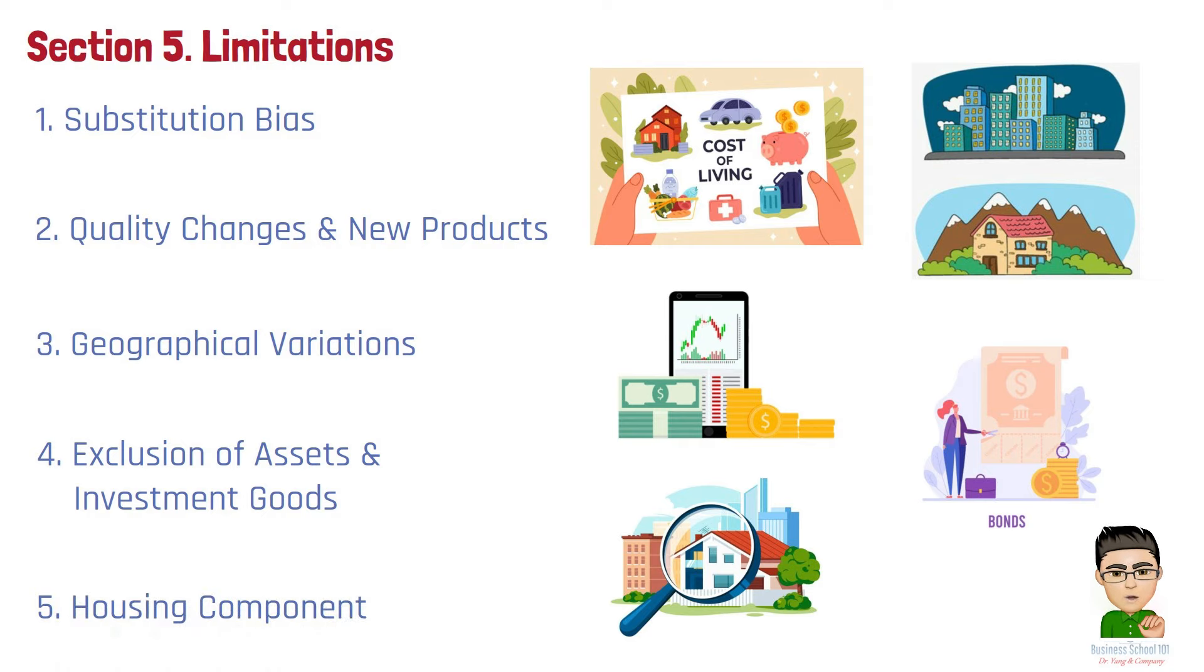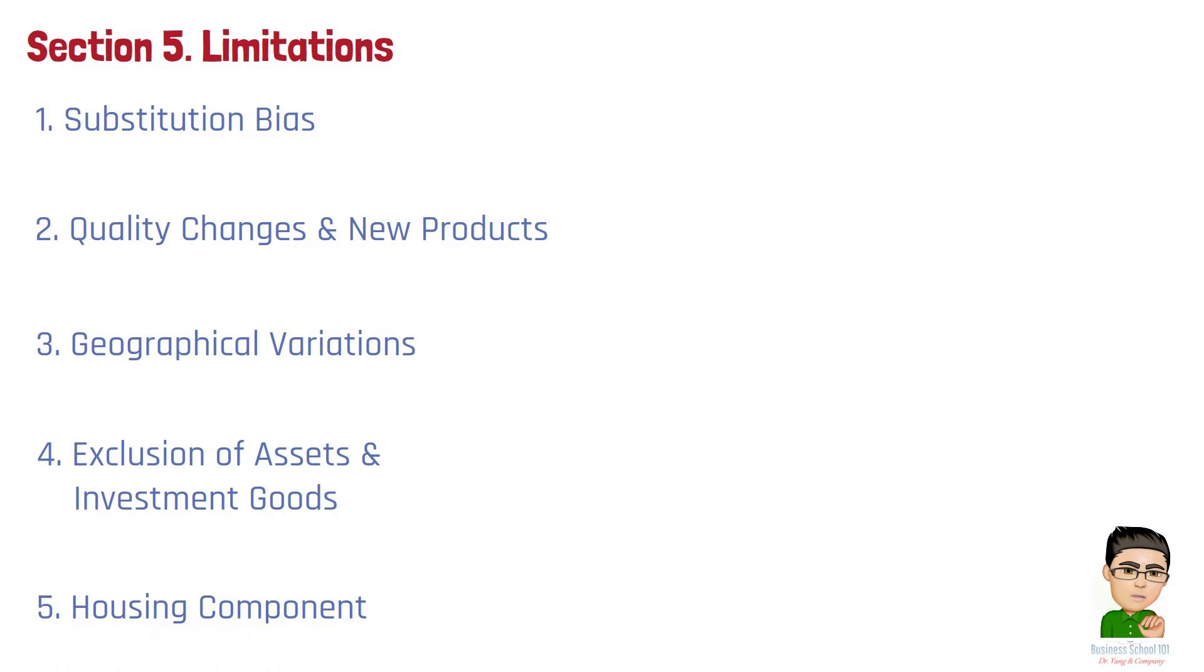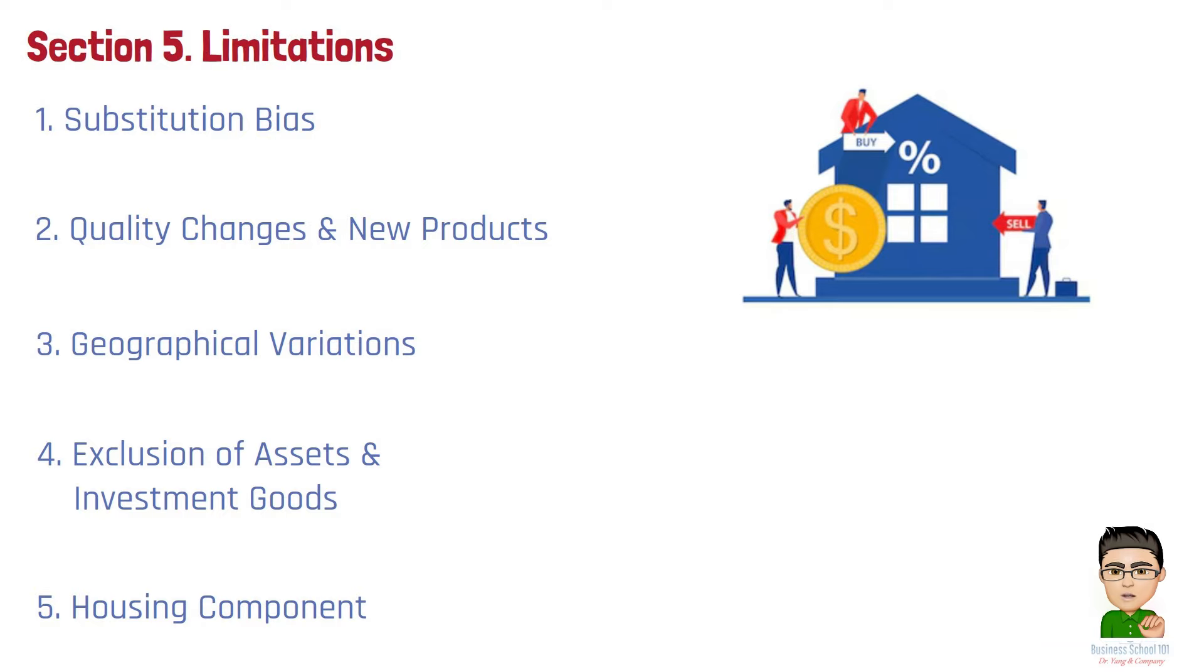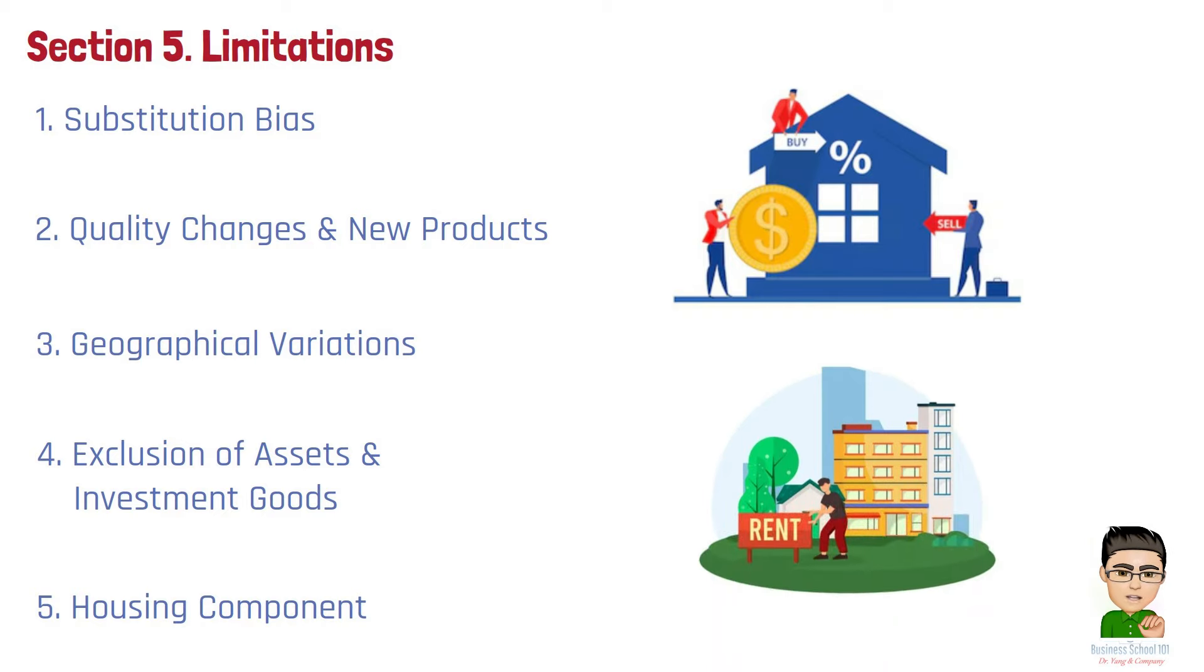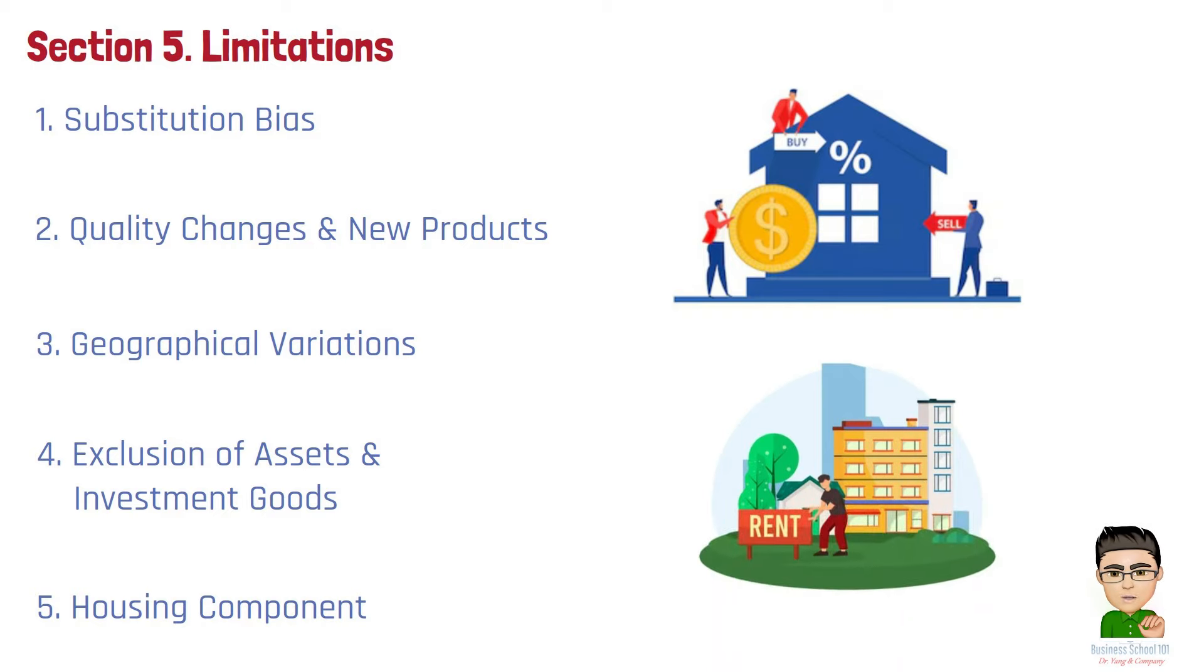Number 5. Housing component. The way housing costs are factored into the CPI can be a limitation. Often, the cost of owning a home, through mortgage interest or property taxes, is not directly included, and renting costs are used as a proxy, which may not fully represent housing market changes.